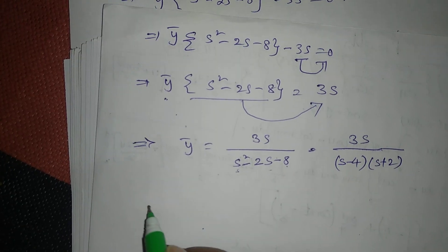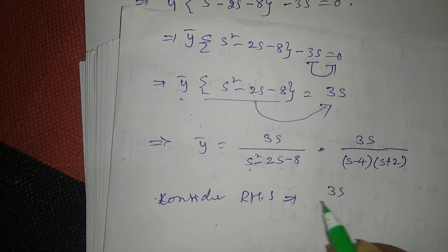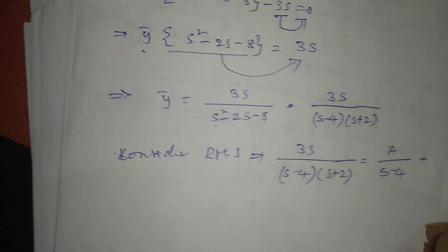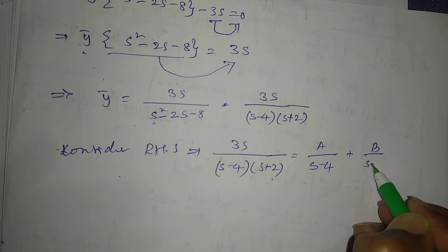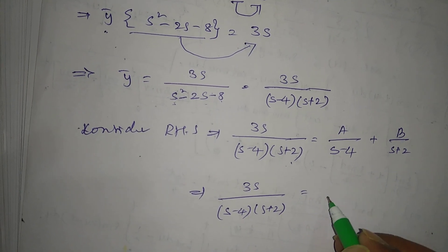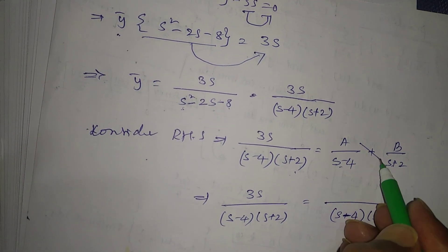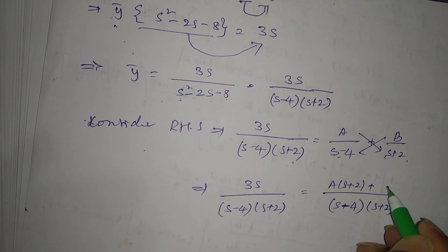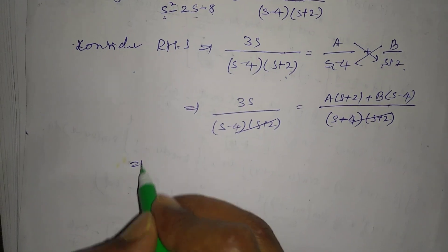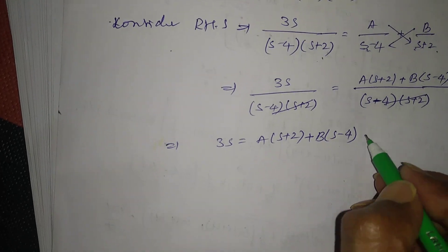Now apply partial fractions. Let 3S / [(S - 4)(S + 2)] = A/(S - 4) + B/(S + 2). Taking the LCM and cross-multiplying both denominators, we get 3S = A·(S + 2) + B·(S - 4). Call this equation (1).